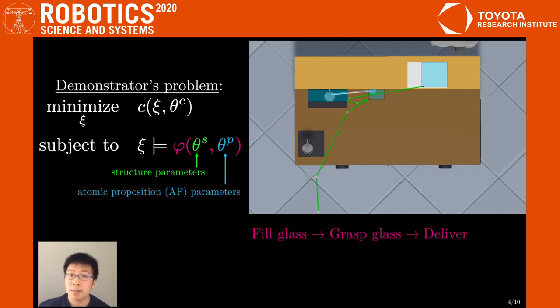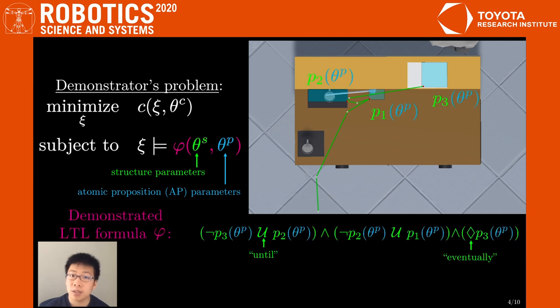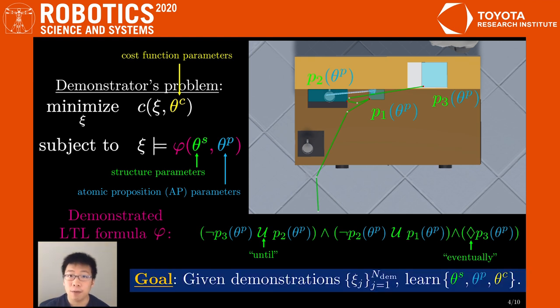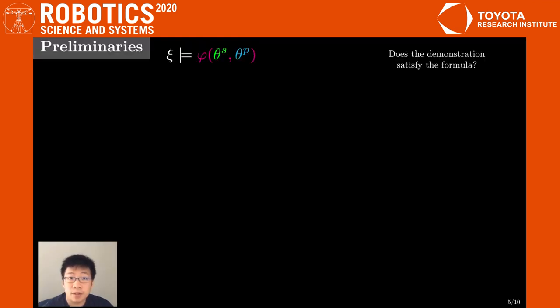Concretely, we can represent the bartender task in this format by stringing together APs, like the glass and delivery states, with temporal LTL operators that define the high-level task structure. The cost function encodes efficiency concerns, like path length. Now formally, our goal is to learn the unknown parameters using demonstrations that are solutions to this optimization. Before discussing our method,